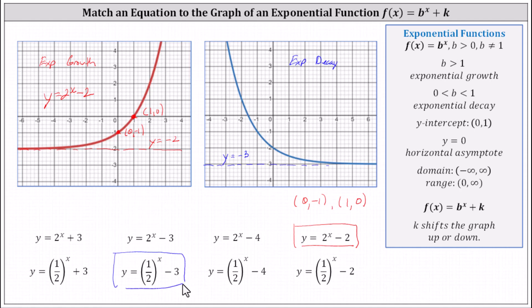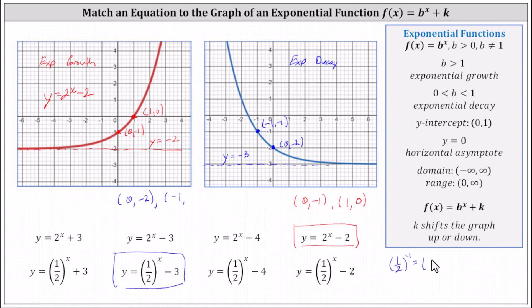Let's verify this by selecting two points on the blue graph. Let's use the y-intercept at (0, -2) and the point (-1, -1). Using y equals one half to the power of x minus three: when x equals zero, y equals one half to the zero minus three, which is one minus three, or negative two — this point is on the graph. When x equals negative one, y equals one half to the negative one minus three; one half to the negative one equals two, and two minus three is negative one. The point is on the graph. We have the correct equation. Let's label the graph as y equals one half to the power of x minus three.